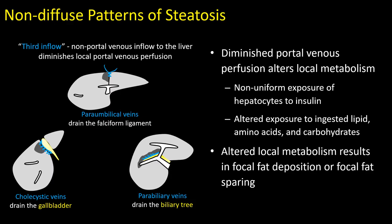When we think about the more focal or non-diffuse patterns of steatosis, one way we can recognize this form is based on characteristic classic locations, due to a third inflow phenomenon. While we think of the liver as having dual blood supply — 80% of oxygenation from the portal vein and 20% from the hepatic artery — there is also a third form of inflow from small local draining veins draining perihepatic structures.